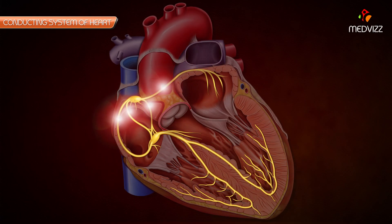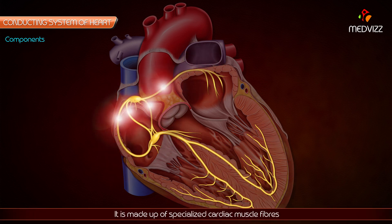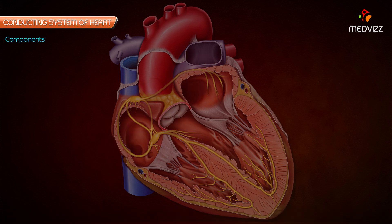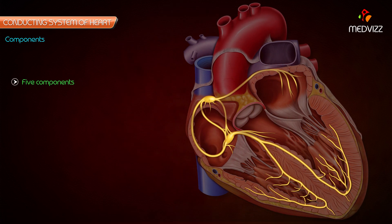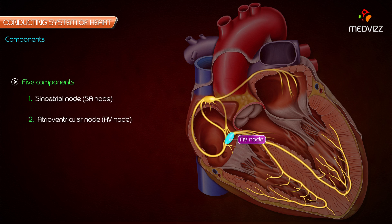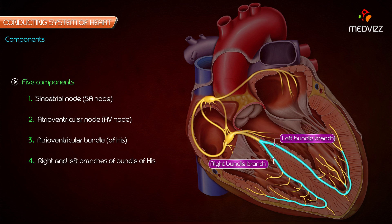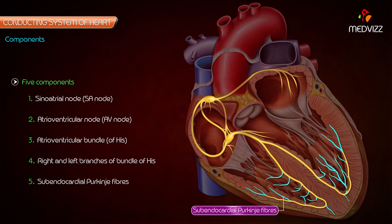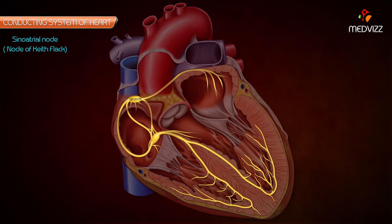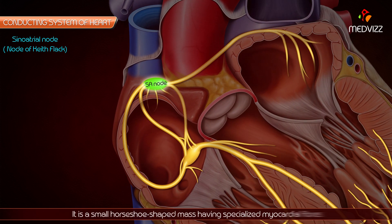The conducting system of the heart is made up of specialized cardiac muscle fibers and is responsible for initiation and conduction of cardiac impulse. The conducting system of the heart consists of the following five components: sinoatrial node, atrioventricular node, atrioventricular bundle, right and left branches of bundle of His, and subendocardial Purkinje fibers.